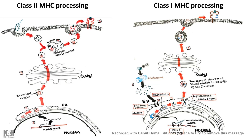The MHC class 2 molecule is fully assembled in the ER, but at that point no antigen is loaded onto it. Instead, a chain known as HLA-DM is loaded onto it as a placeholder.